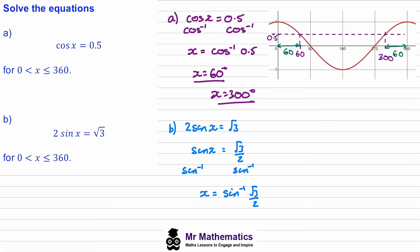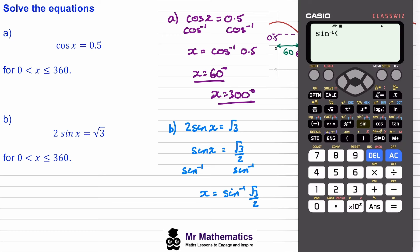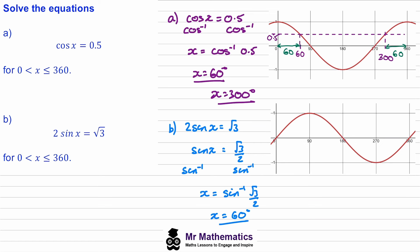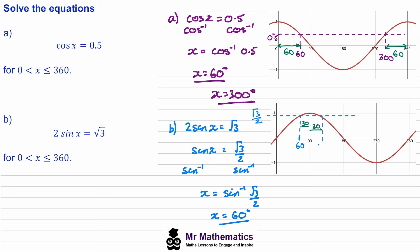I'll show you how to work this out on a calculator. We press shift and sine for arc sine, then enter root 3 over 2, and we get x equals 60. Now to find the other solution, we sketch the sine graph. We know our first solution is at 60 degrees, so we go up to the curve and across. The y value will be root 3 over 2. The sine graph is symmetrical from 0 to 180 about 90 degrees, and 60 is 30 away from 90, so going 30 in the other direction gives 90 plus 30 equals 120. So our solutions are x equals 60 and x equals 120 degrees.